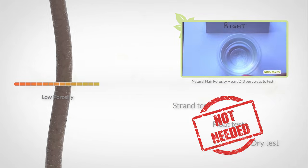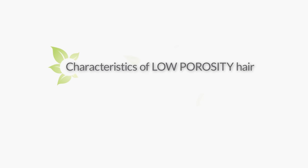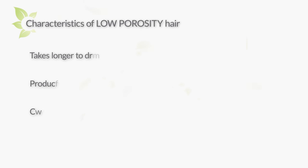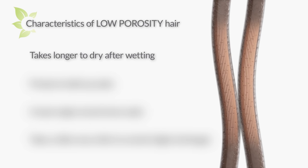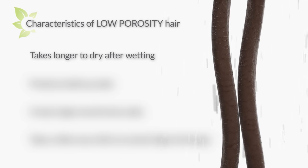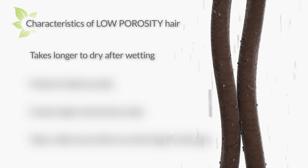Unlike hair that's high in porosity, low porosity hair takes a longer time to dry when it's soaking wet. Here's why: the function of the cuticle layers of the hair strand is to protect the more fragile layers underneath from things like wear and tear, excessive heat, and water overload. So when hair with tight cuticles gets wet, water slowly seeps in. Your tight cuticles make it possible for your hair to take in what it needs and reject the rest in the form of water beads.